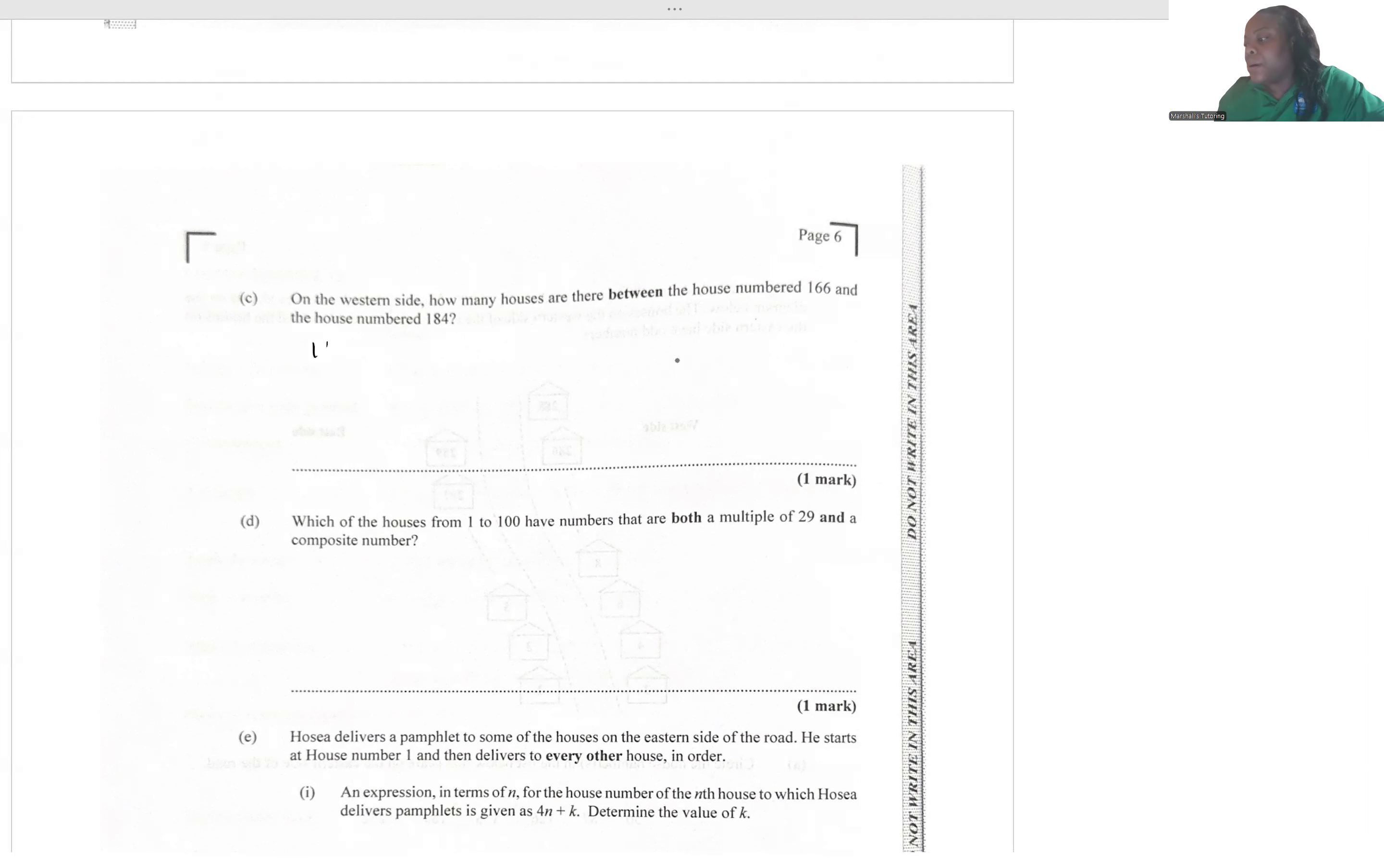This time we're going to say the upper, which is 184, minus the lower, 166, divided by 2, but this time we are going to subtract 1. So 184 minus 166 gives us 18 divided by 2 minus 1. That's 9 minus 1, which will give us 8 houses.